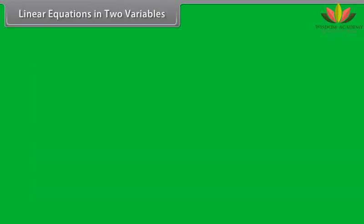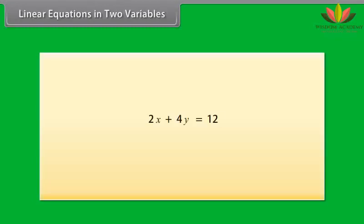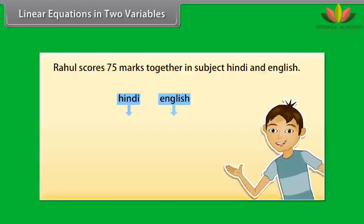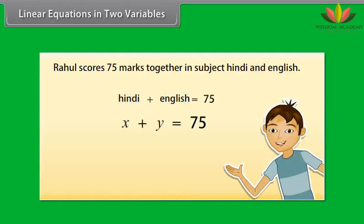A linear equation can have more than one variable. Here we will study about linear equations in two variables. Let's take an example: Rahul scores 75 marks together in Hindi and English. The marks of neither subject are known — there are two unknown quantities. Let us use X and Y to denote them. So, the marks scored in Hindi is X and in English is Y. Therefore, X plus Y equals 75 is the required equation.